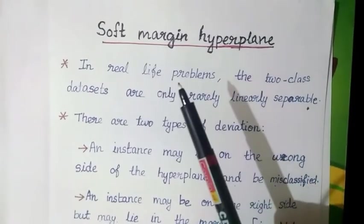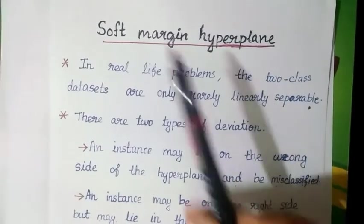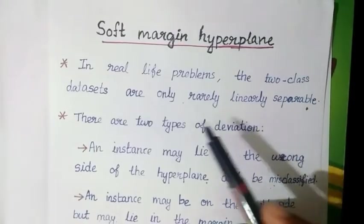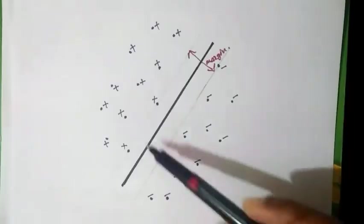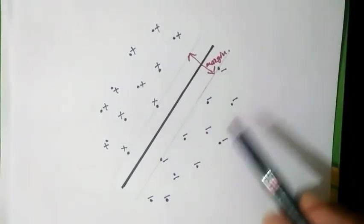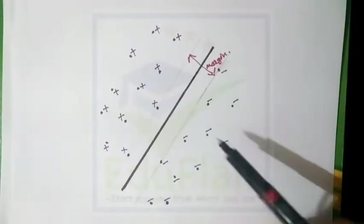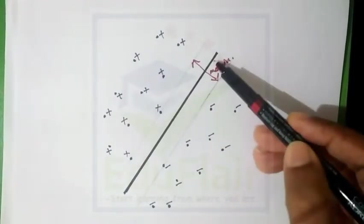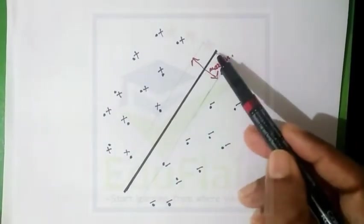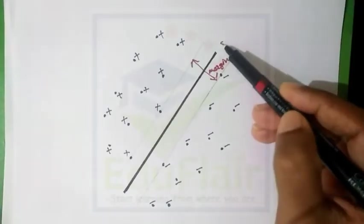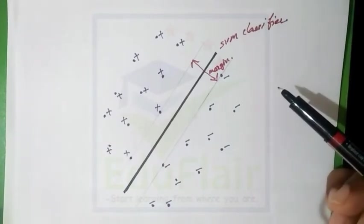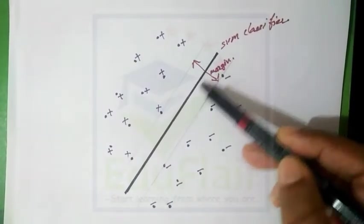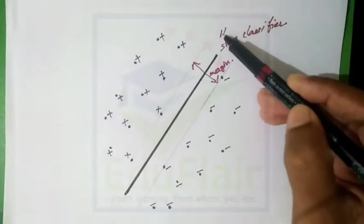Hello everyone, today we are going to discuss the topic soft margin hyperplane. We have already discussed SVM in a previous video. There you can see a dataset with negative samples and positive samples, a separating hyperplane with maximum margin — this hyperplane is called the SVM classifier. This maximum margin approach is called hard SVM.